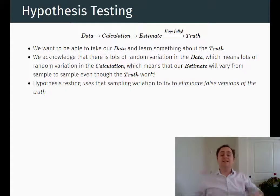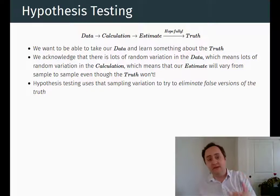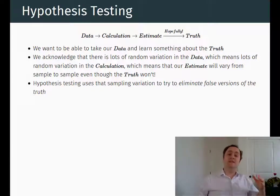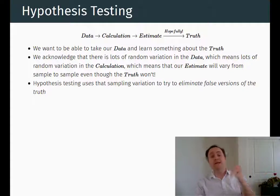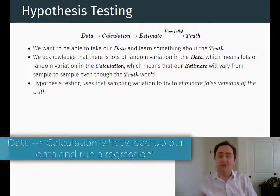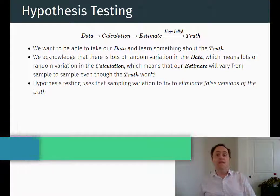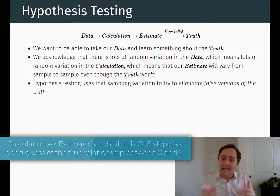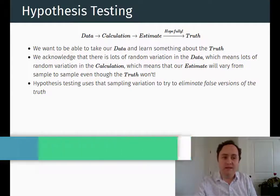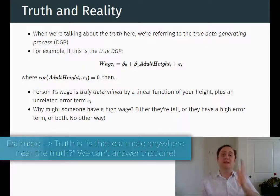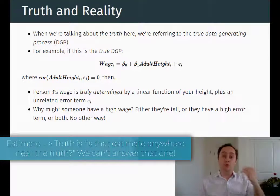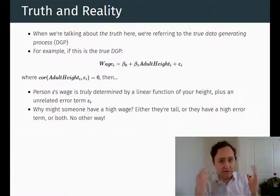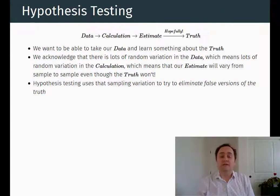So what we actually see is data. We gather some data and see what we see, but that's not quite enough — we need to take that data and perform some sort of calculation on it. If we think there is a linear relationship between height and wage, then we would probably run an ordinary least squares regression. We would calculate the OLS model, and the slope we get from that calculation would be our estimate of the true beta one in our true model — we want to know what the effect of height on wage is.